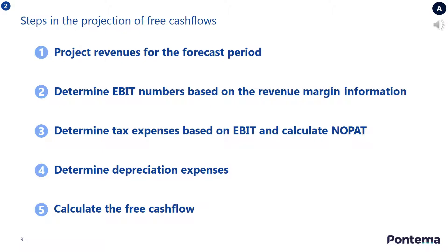The first step in performing a discounted cash flow valuation is to project free cash flows. This step has five key tasks, as shown in the slide. These are: firstly, to project revenues for the forecast period; secondly, to determine the EBIT numbers based on the revenue margin information; thirdly, to determine tax expenses based on the EBIT and calculate net operating profit after taxes; fourthly, to determine depreciation expenses; and lastly, to calculate the free cash flows for the forecast period. Take some time to calculate your answers step by step, based on the case study information.